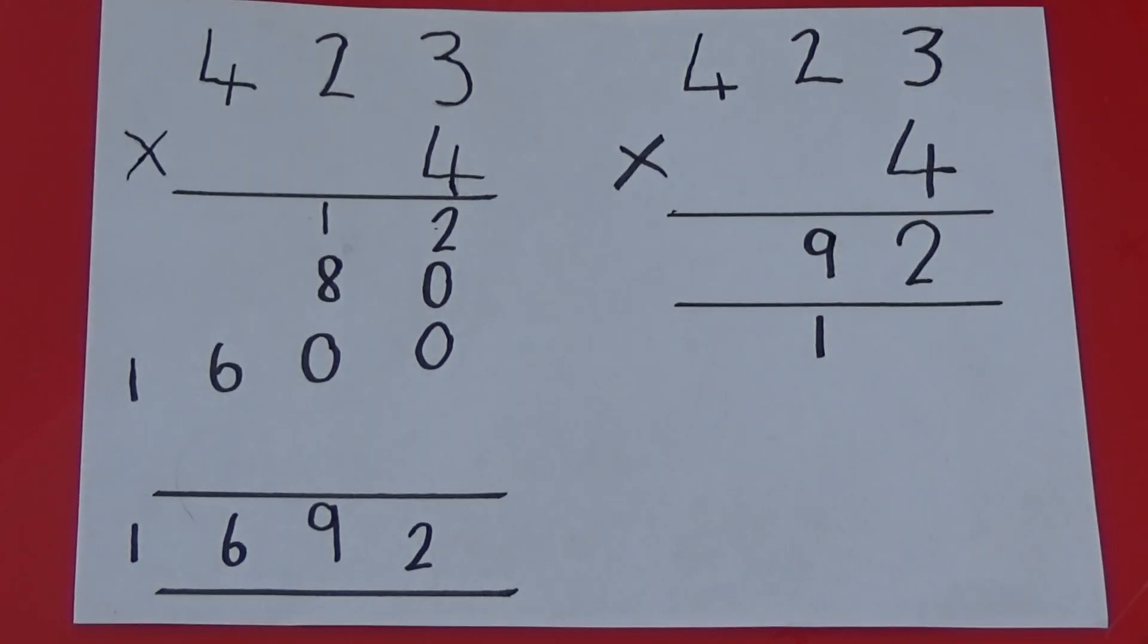Then, we need to multiply 400 by 4, this gives us 1,600, so we need to put 1 in the thousands column, and 6 in the hundreds column.